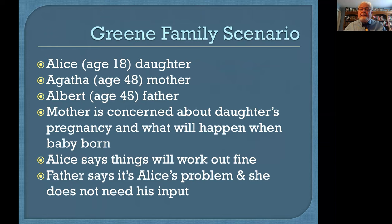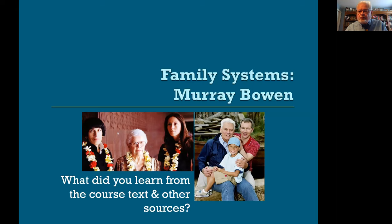I'm going to be doing a series of role plays in class to demonstrate the models we're talking about, using a role play with the Green family — 18-year-old Alice and her parents, Agatha and Albert. Mother is concerned about her daughter's pregnancy. Alice says everything's going to turn out fine, and her father says it's Alice's problem and he doesn't need to provide input. That's the tension this family brings into the counseling appointment, and we'll talk about how different models may approach this tension.